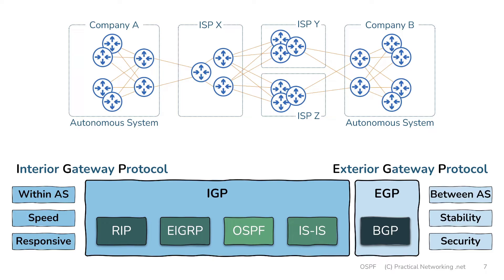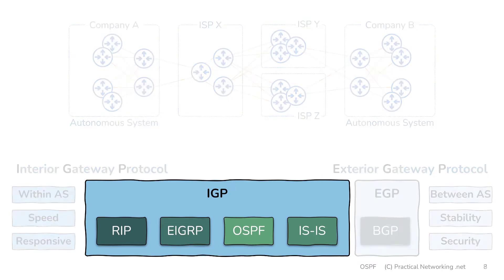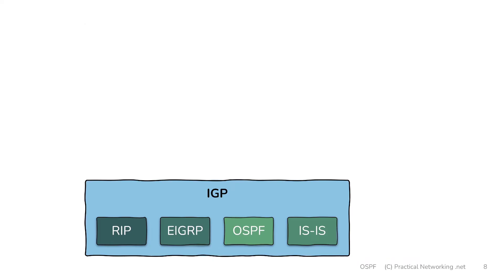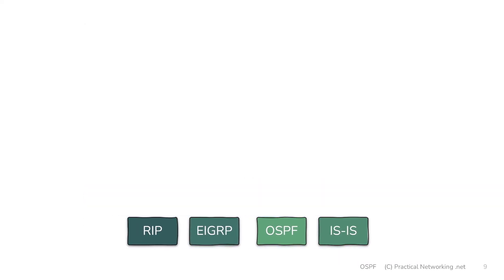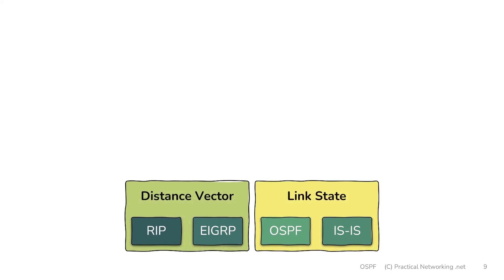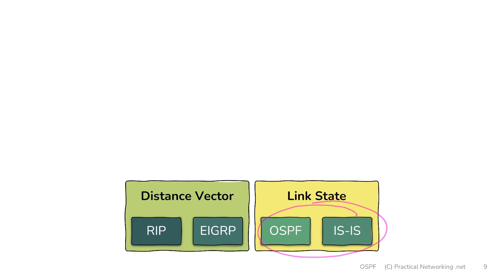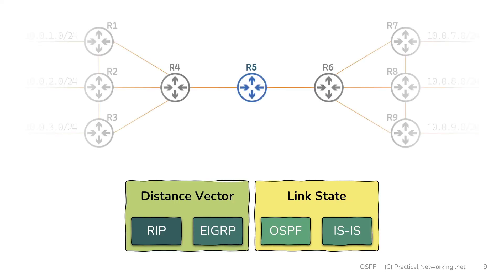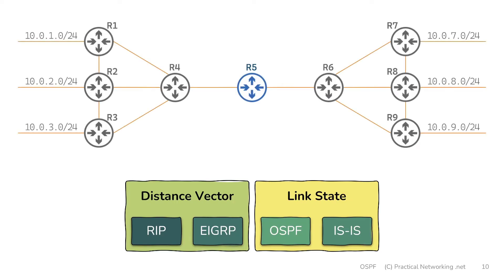That's a high-level comparison of IGPs versus EGPs. The important thing as a network engineer is to understand the pros and cons of both and make the best decision for your particular topology. Next we're going to dive a little further into IGPs and break these four protocols into two other categories: distance vector protocols, which include RIP and EIGRP, and link state protocols, which include OSPF and IS-IS.